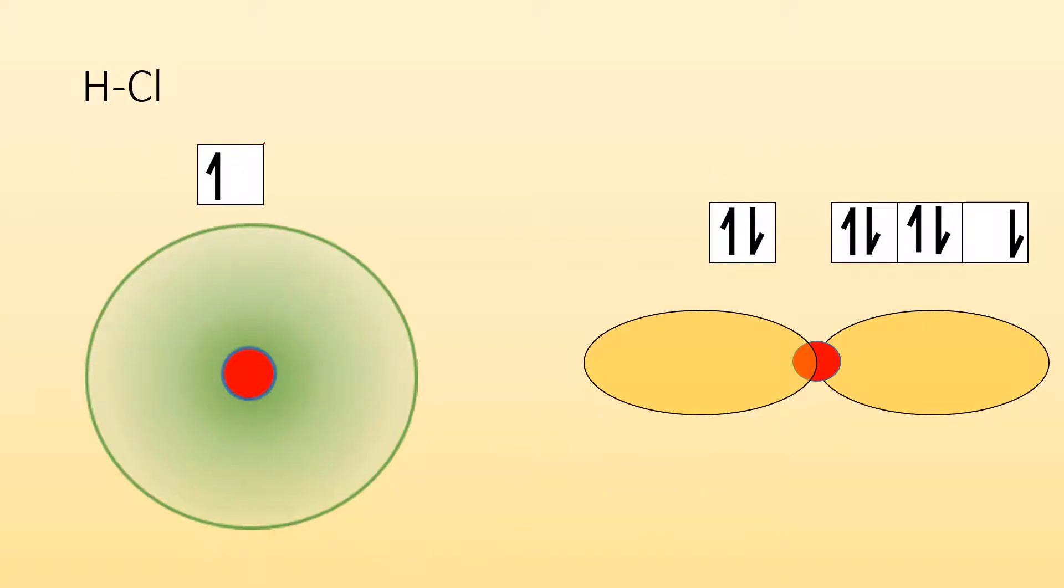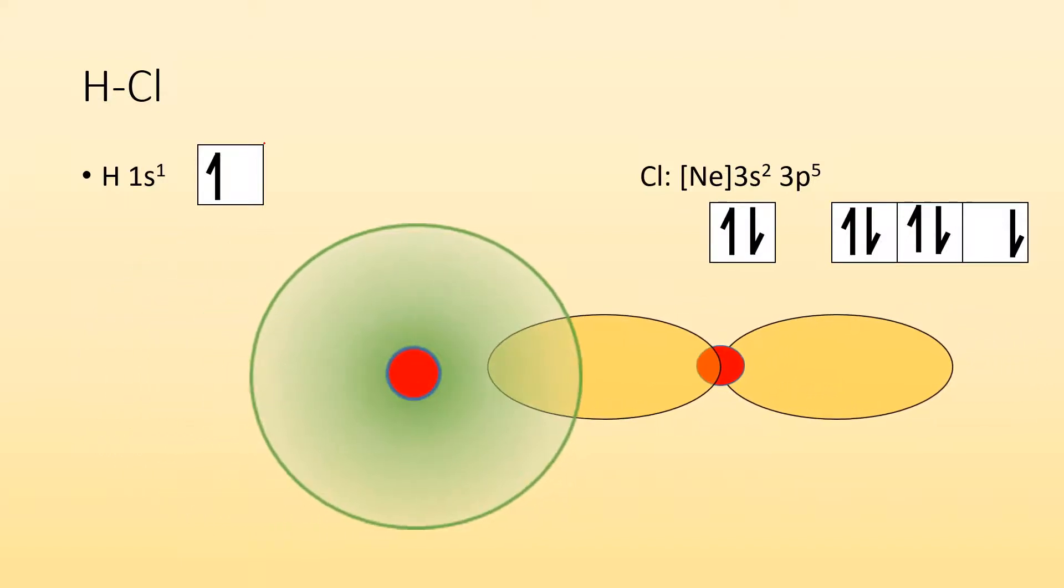Same thing with HCl. We can see that chlorine has this unpaired electron in the P subshell, and hydrogen has an unpaired electron in the S subshell. So they can overlap and share those unpaired electrons. Now this chlorine is kind of sharing its one and kind of receiving the one from the hydrogen. So they're sharing these electrons so that they both have this full orbital.